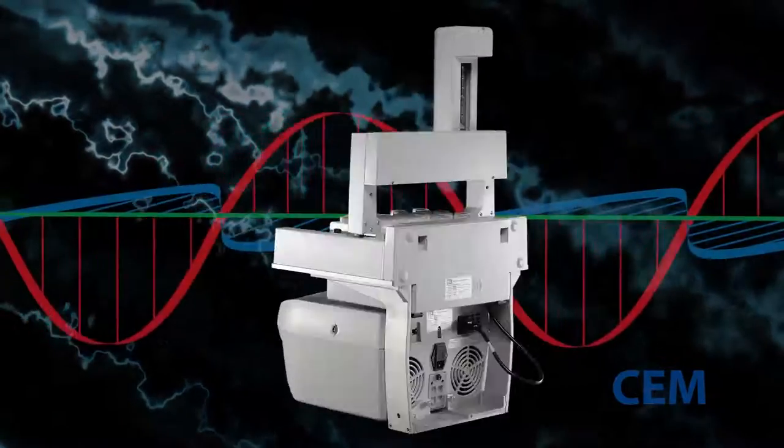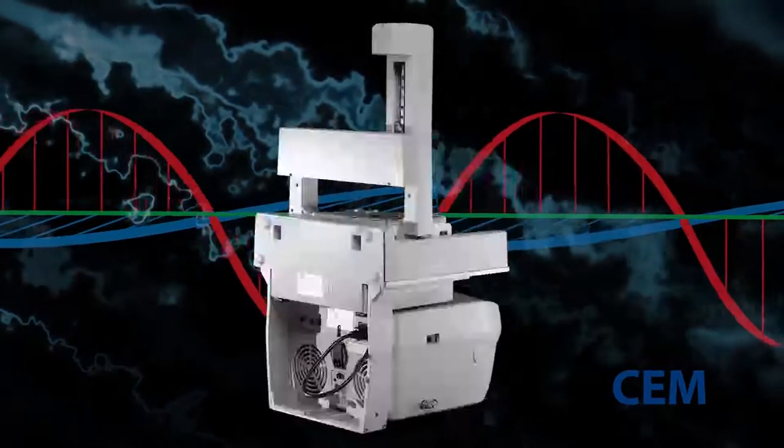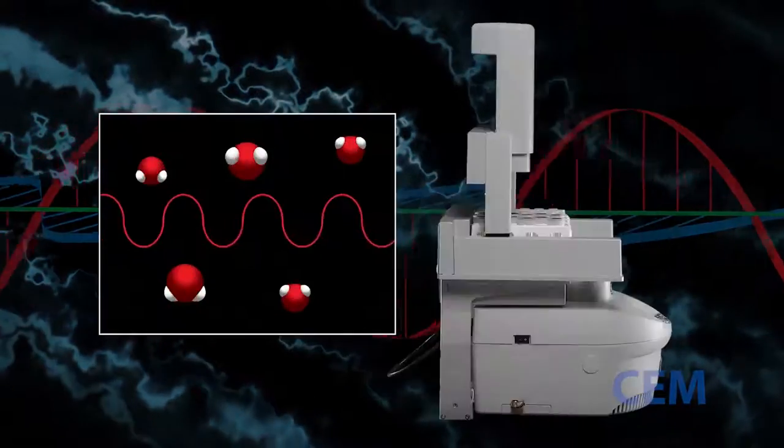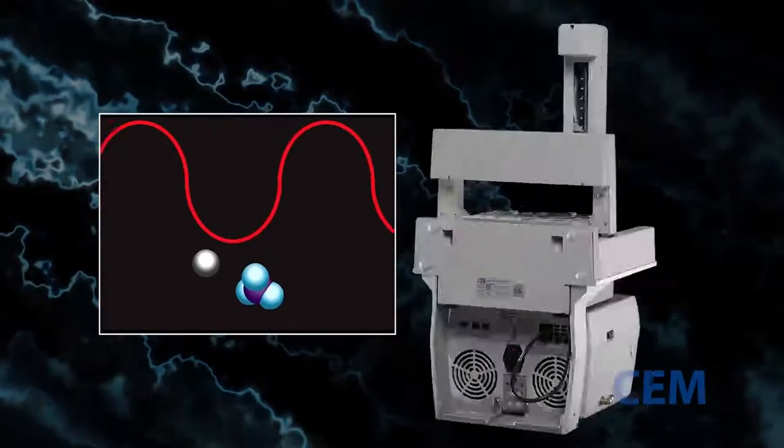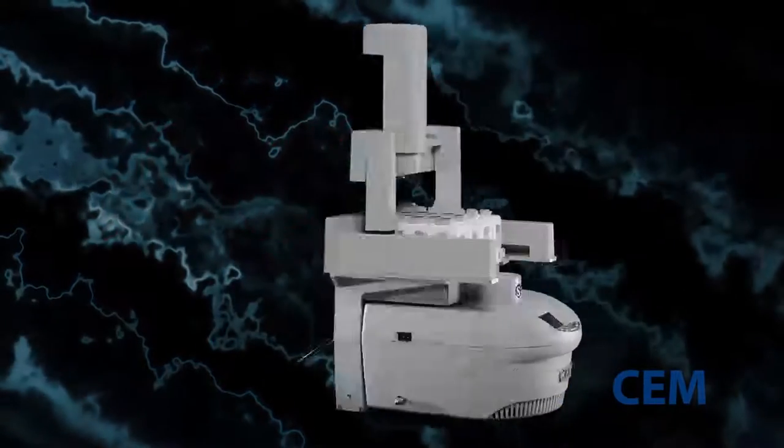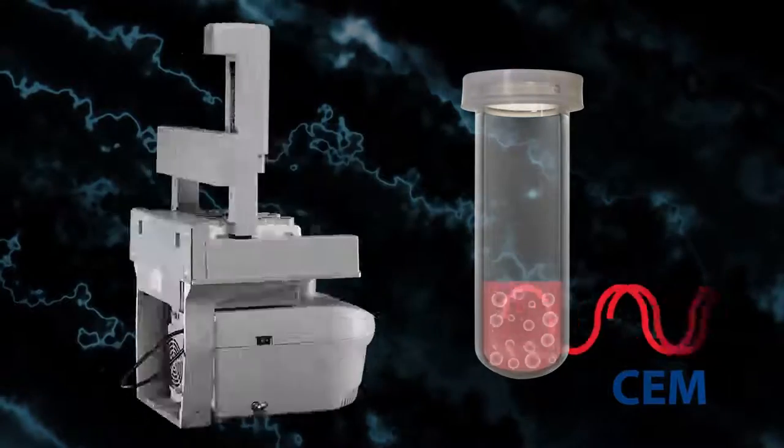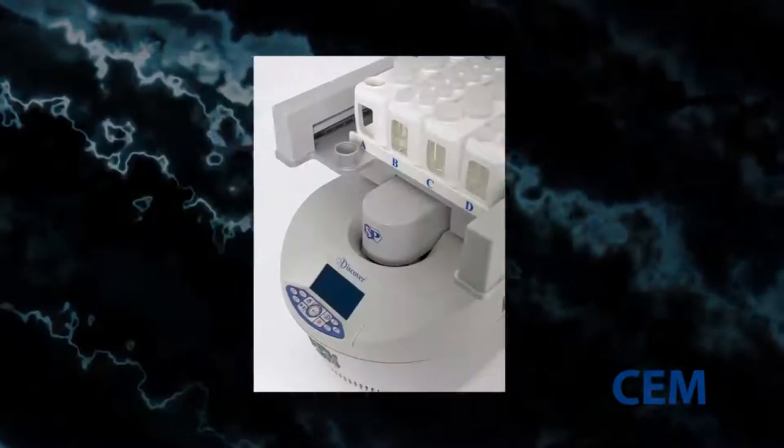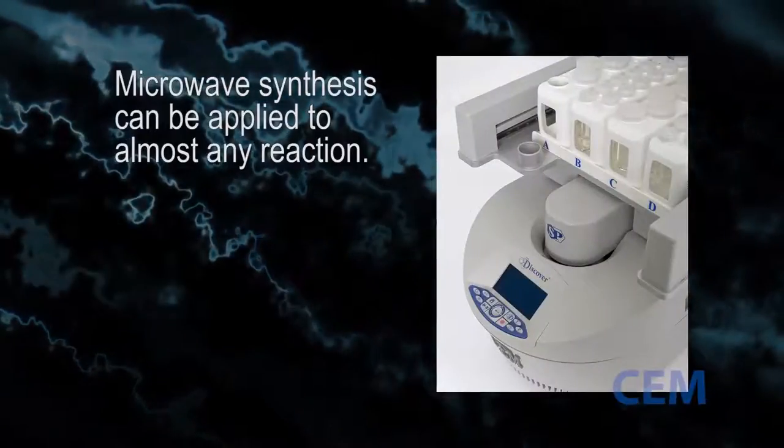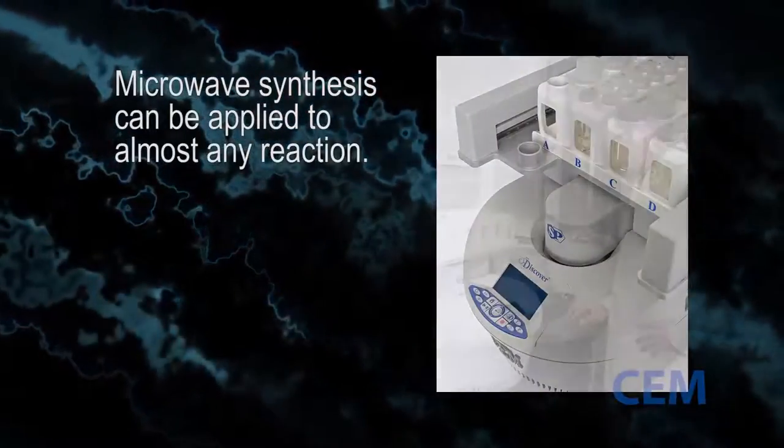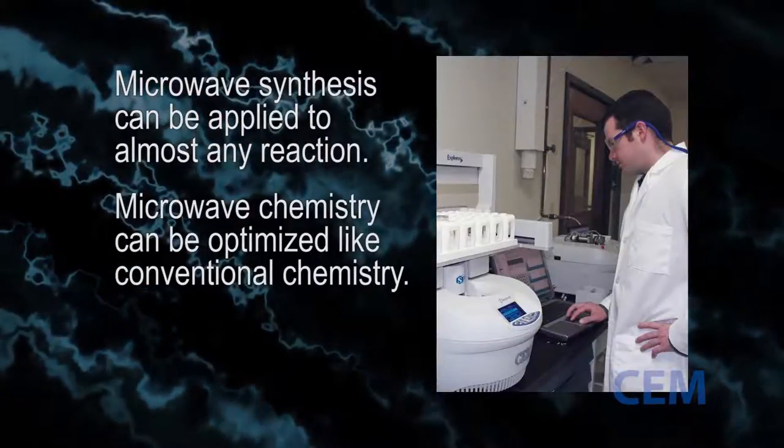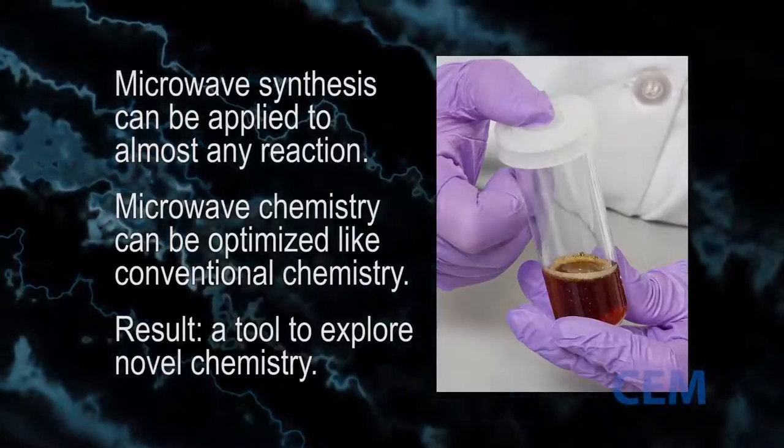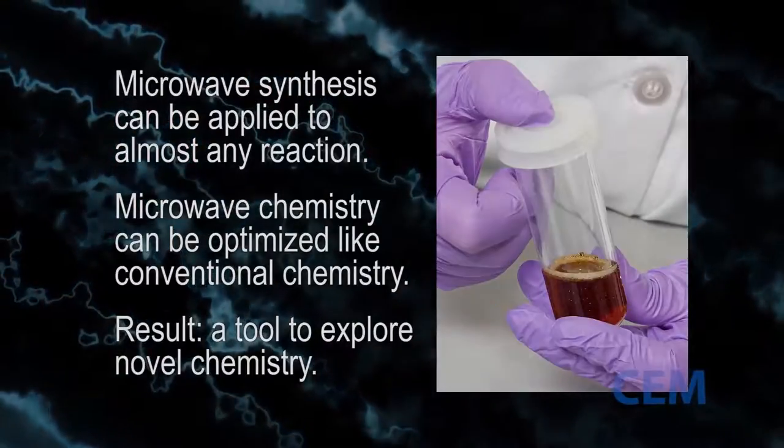To review, we've learned about the nature of microwaves as a form of electromagnetic energy. Their electric field heats matter kinetically through dipole rotation and ionic conduction. When compared to inefficient convective heating normally used in chemistry labs, the rapid volumetric heating of microwave energy provides numerous benefits. We also saw that microwave synthesis can be applied to virtually any reaction. Microwave chemistry is simple and can be optimized just like conventional chemistry. And the end result is a tool that allows scientists to explore novel chemistry.